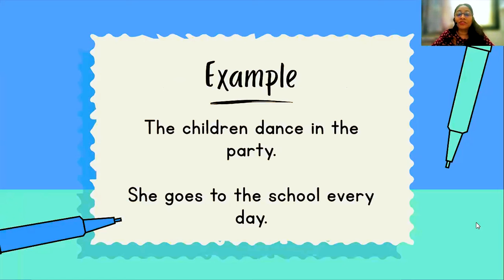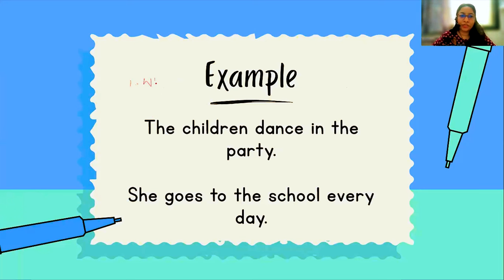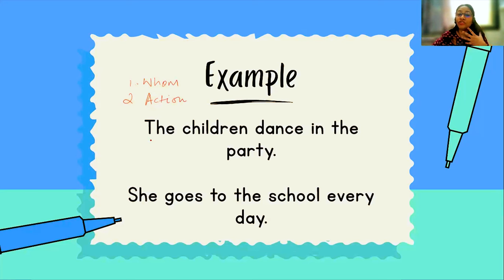Now let's look at two examples and try to recognize the personal pronouns. The first example is: 'The children dance at the party.' The first thing you are going to remember is: this pronoun — whom are we talking about? Your first question should be, whom are we talking about in the sentence? And these are the ones who are performing the main verb or the action. So whom are we talking about? We are talking about the children.